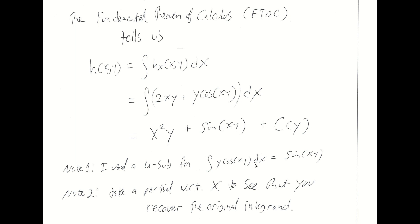This is the expression we're looking at. I did use a little mini u-sub going from here to here. It's worth noting that whenever you've tried to take an anti-derivative, you can always take a partial derivative and make sure that you recover your original integrand. If I take this final line and take a partial with respect to x, I will get this integrand: 2xy from the first term, y cosine of xy from the trig term, and zero from c(y) since it depends only on y. You should always do that check.